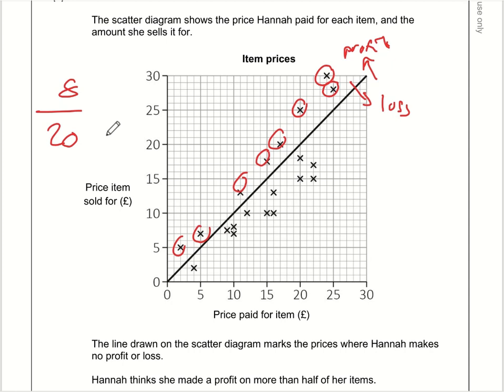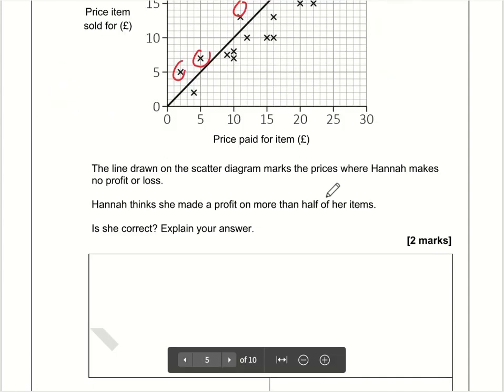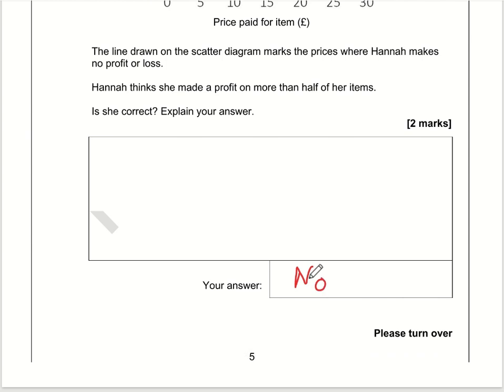She thinks she's made a profit on more than half, but eight out of twenty is less than half because half of twenty is ten and she's only made a profit on eight of them. So is she correct? No, she is wrong.